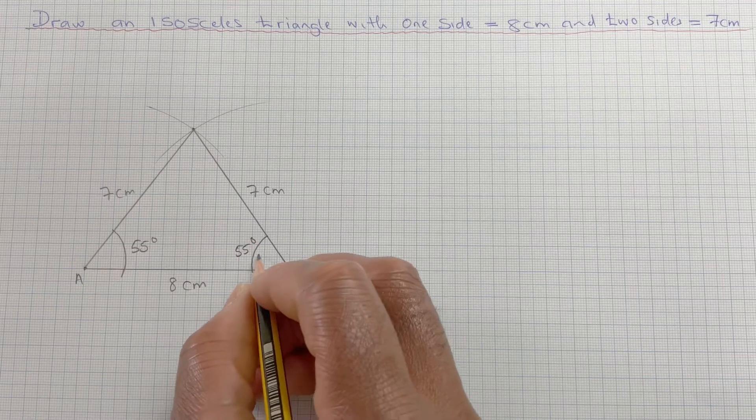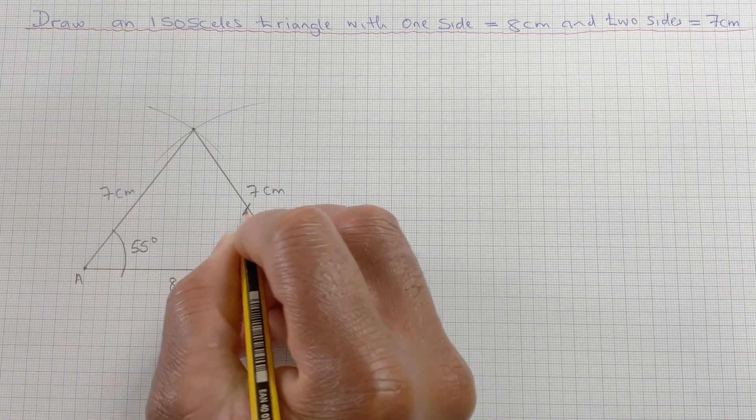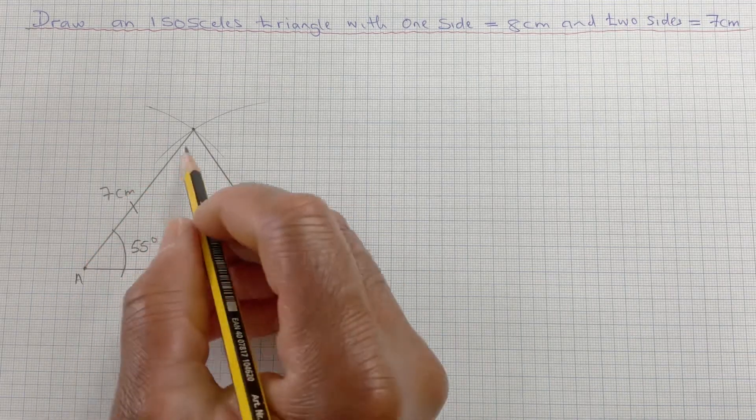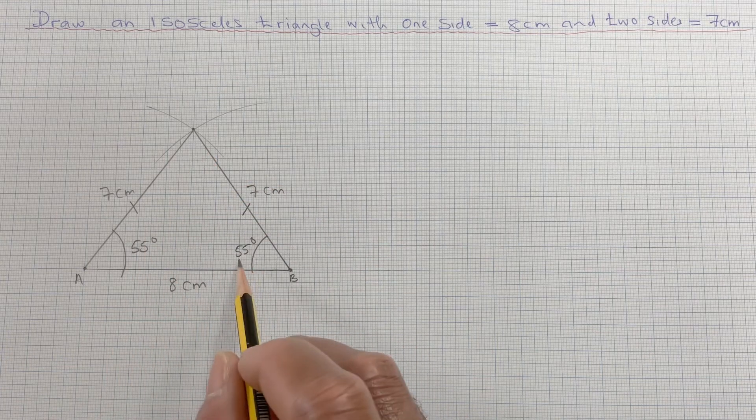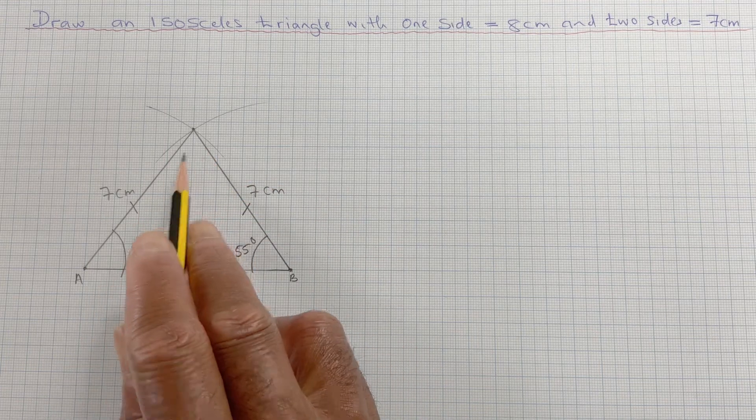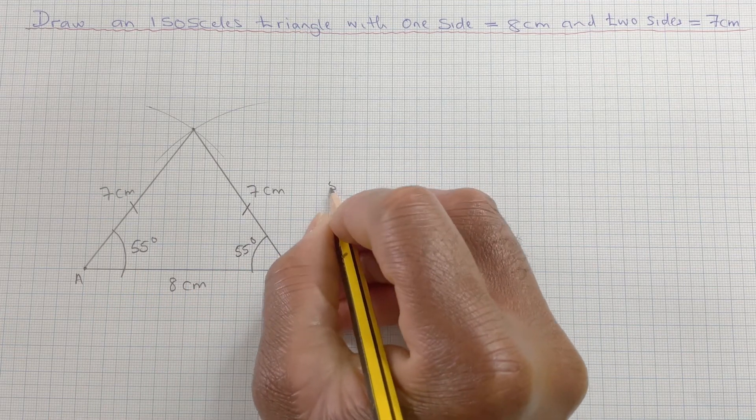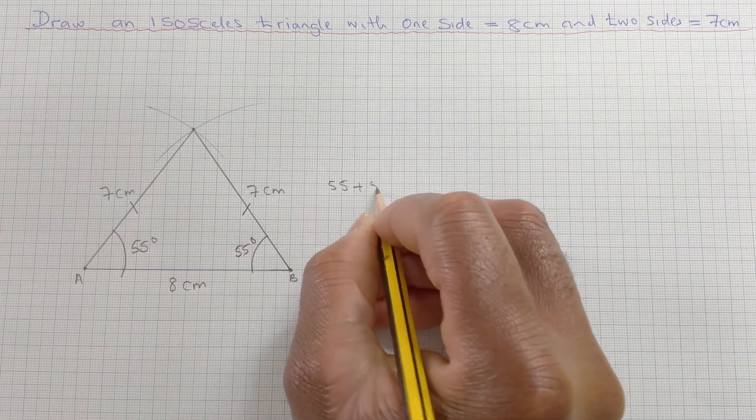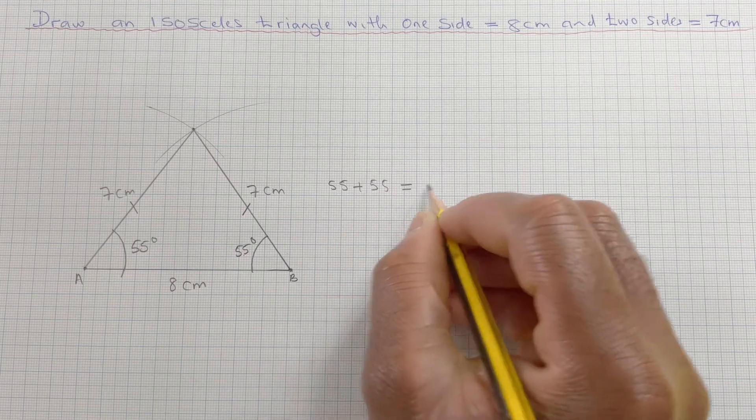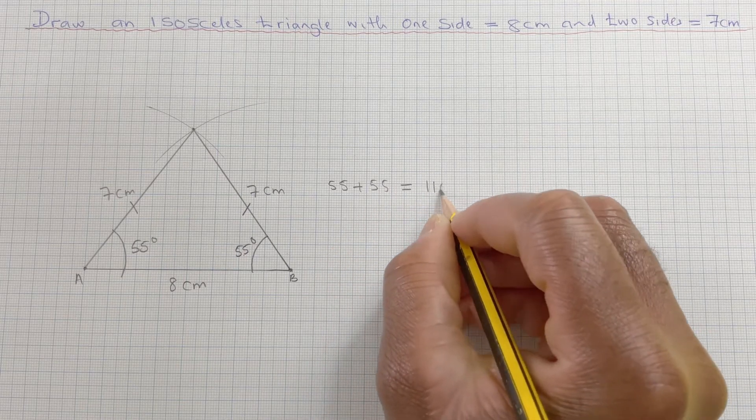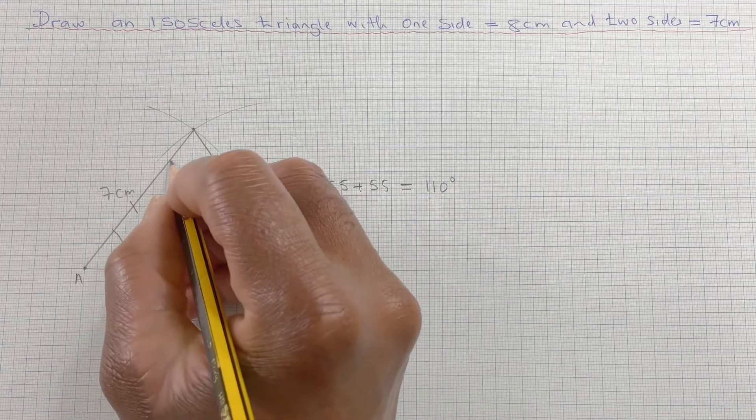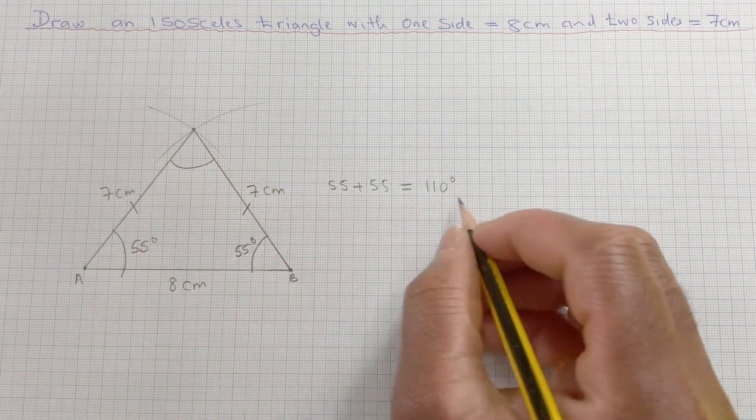So that meant this is an isosceles triangle. We could measure that angle. We know if we work it out what it will be, because this angle plus that angle, we've got 55 plus 55 will be 110 degrees. Which meant that this angle should be...